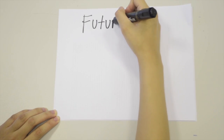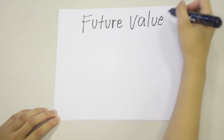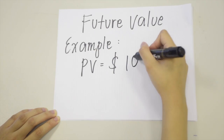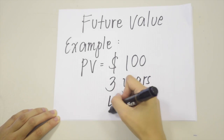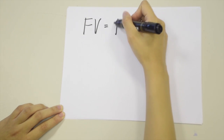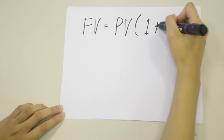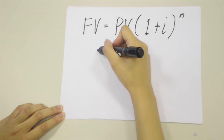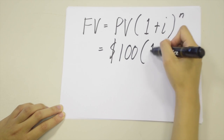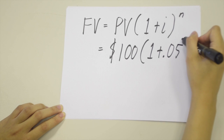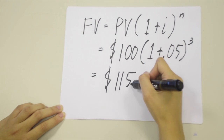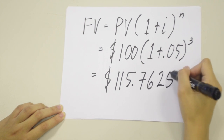Let's try solving for the future value. Let's say we have a principal amount of $100, compounded for three years with an annual rate of 5%. To solve, we use the formula: FV = PV × (1 + interest rate)^N. Plugging in the values: $100 × (1 + 5%)^3, resulting in a future value of $115.7625.